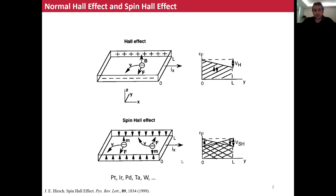As we know from the literature, spin-orbit coupling occurs in any material, but it becomes dominant as the atomic number increases. Because of that, it becomes more apparent in heavy metals like platinum, iridium, palladium, tantalum, tungsten, and so on.